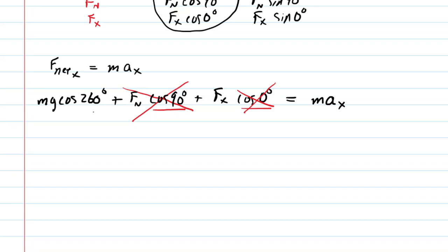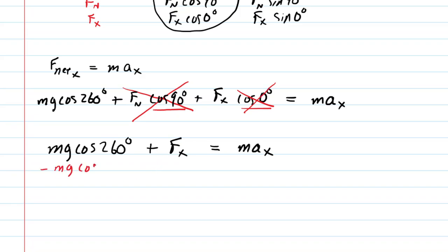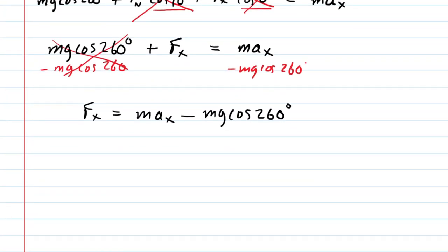Rewriting our equation and subtracting mg cosine 260 from both sides isolates f sub x. Now for Part a, the question states that velocity is constant. When velocity is constant, that means the acceleration in both the x and y directions equals zero. So we'll plug in zero for the acceleration in the x direction.